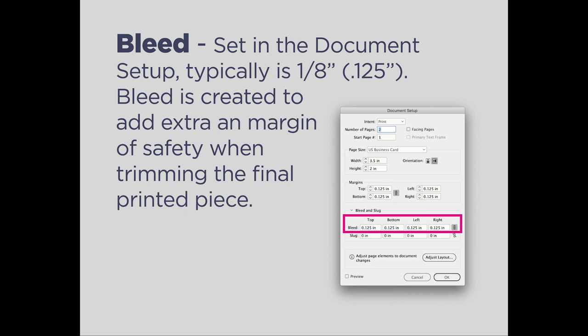Typically, we set this up in the document setup. Here I'm showing you this in InDesign. When you set up a document and go into the file menu and choose new document, you can set up your sizes, your number of pages, your margins, and then under bleed and slug, you can set your bleed. If you forget to set the bleed, you can always go back into the file menu under document setup and add the bleed later. Typically, when dealing with a bleed, unless otherwise specified, it is an eighth of an inch, or 0.125. This does not change the overall page size of your document — it goes beyond the page size and adds a special margin.